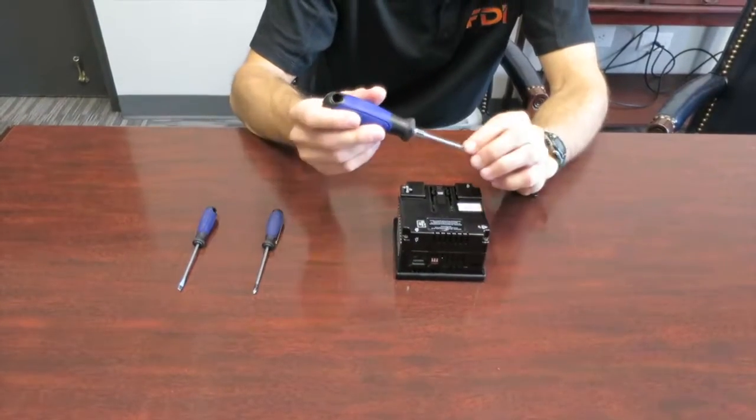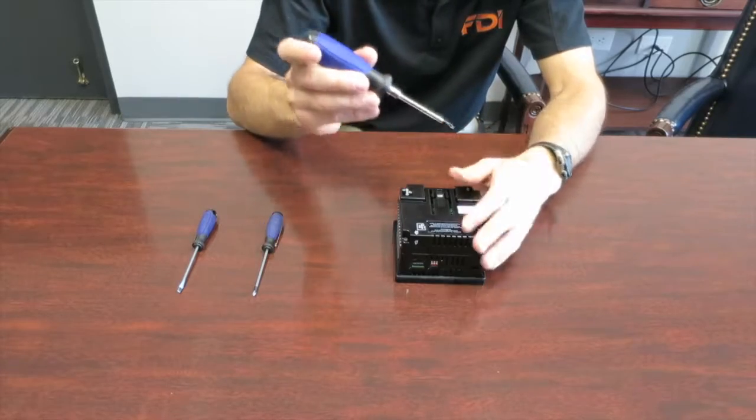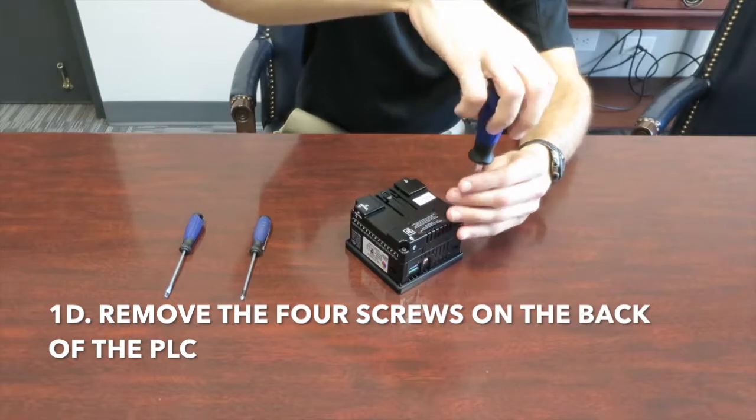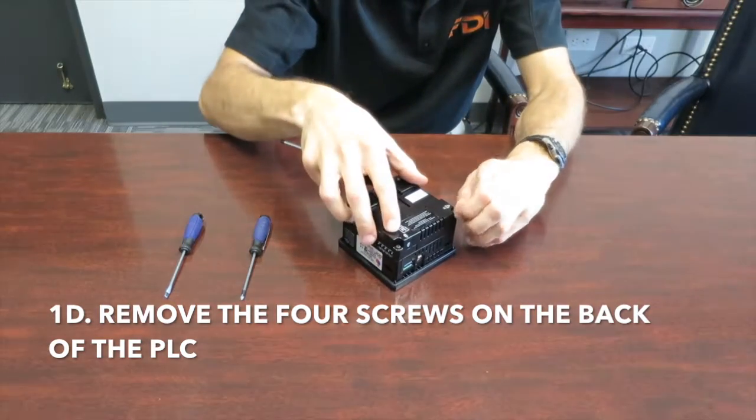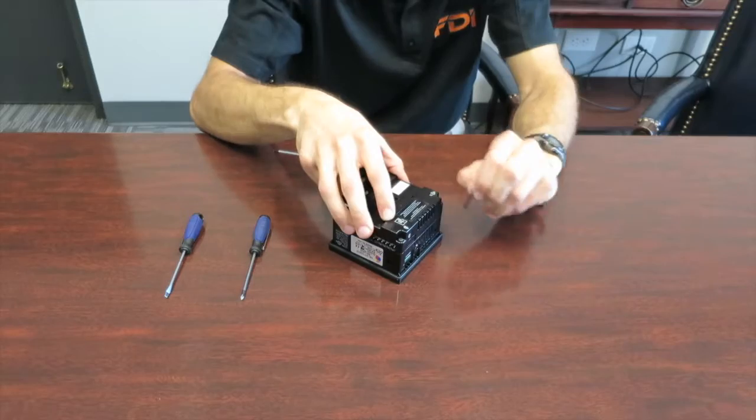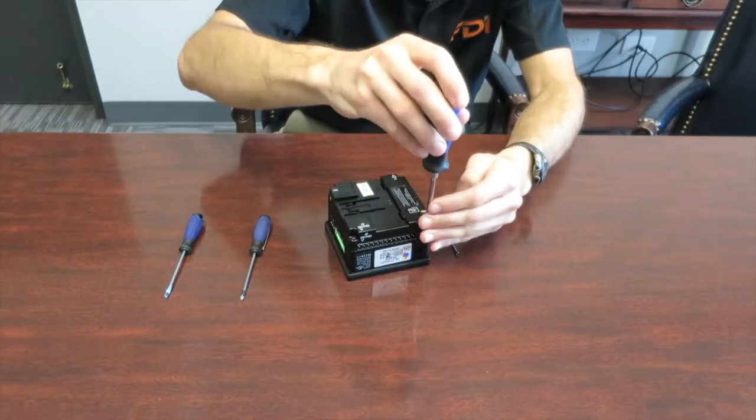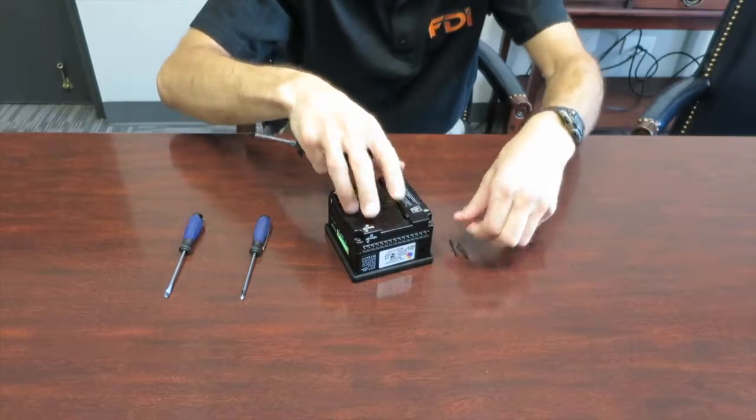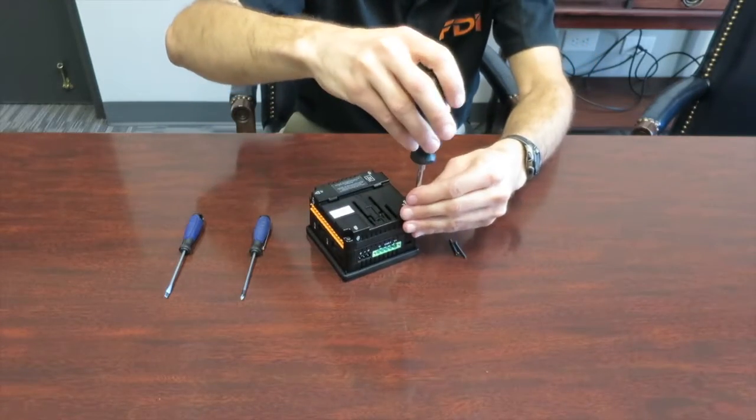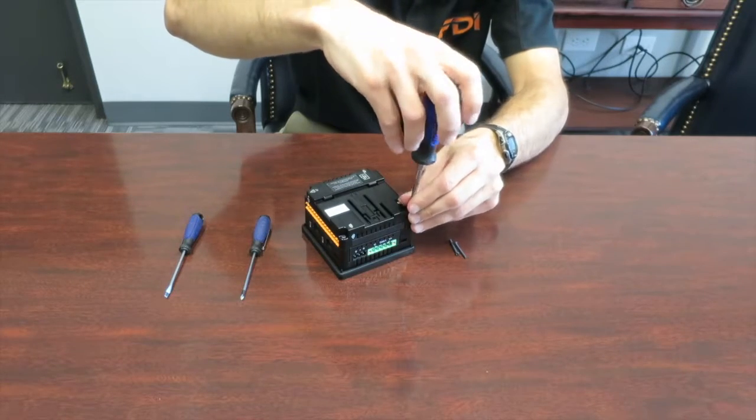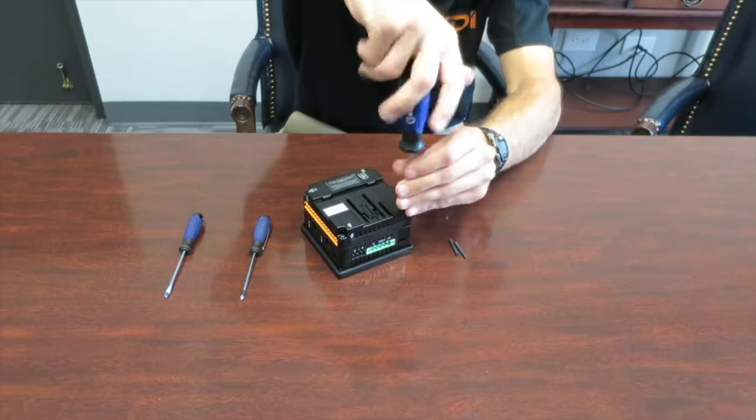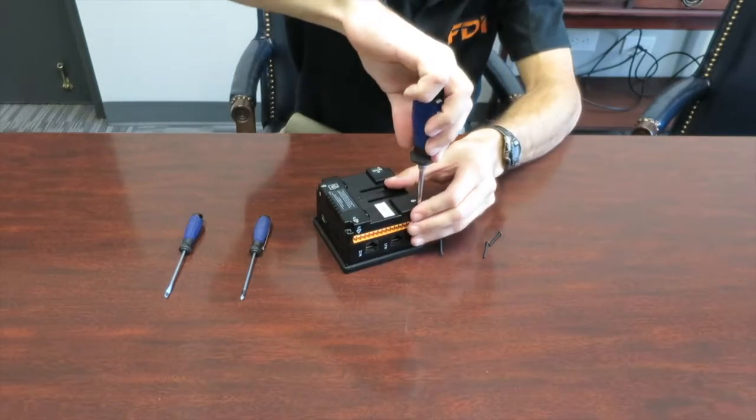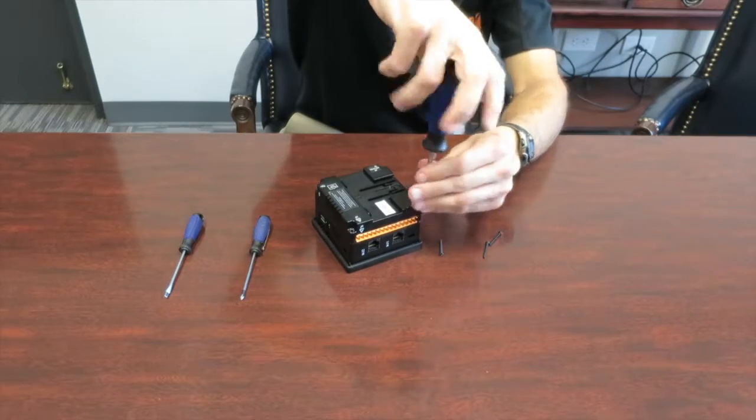First, what we're going to do is remove the four screws on the back of the PLC. There's four screws in the corners, just a Phillips head screwdriver. And then we're going to remove the back cover.